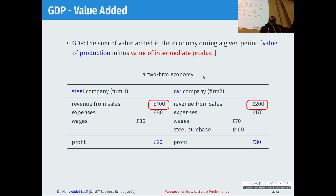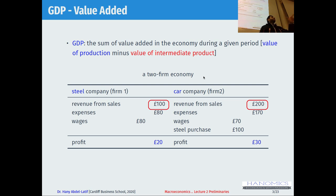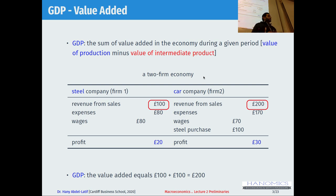Let's assume the first firm had no input from anywhere else, so their value added is £100. They didn't use any intermediate goods. The second firm produced £200, but used £100 worth of steel. So the difference between £200 and £100 is the value added. GDP according to this method is £100 value added from firm one, plus £100 value added from firm two — again giving us £200. Whatever method you use to calculate GDP, it should give exactly the same number.